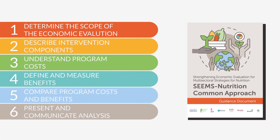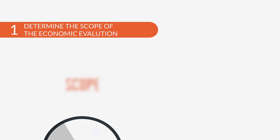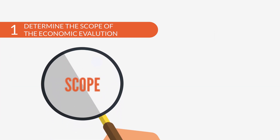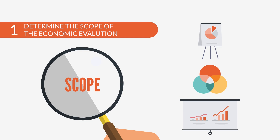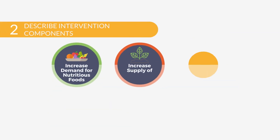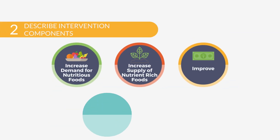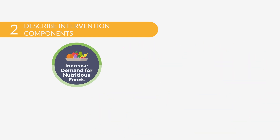The document guides analysts through six steps. First, analysts must carefully consider the broader implementation and evaluation context and map out study characteristics to inform the economic evaluation approach. Next, the analyst will describe their intervention using a standardized typology and conceptual model of multisector nutrition interventions.